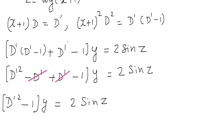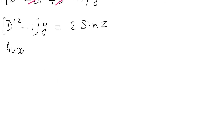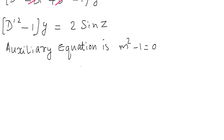The solution y is always the sum of the complementary function plus the particular integral. To find the complementary function, we find the auxiliary equation of (D'² − 1)y = 2 sin z. We substitute m in place of D', giving the auxiliary equation m² − 1 = 0.